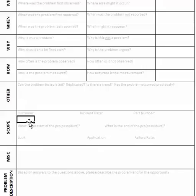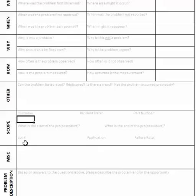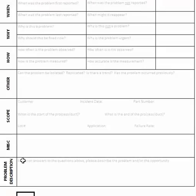In the scope section: who is the customer, what was the incident date, and what is the part number or part ID involved? What is the start and end of the process or product that would include the part number under investigation? If known, the lot number, batch number, or die lot number would go here, along with the application the product is used in — which might refer more specifically to an industrial application — and what the failure rate is, including historical failure rate.